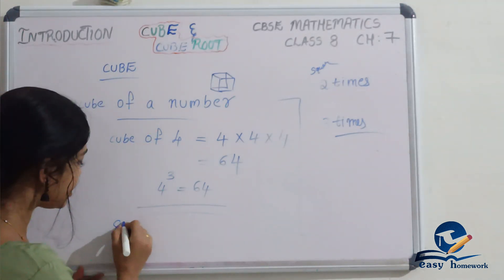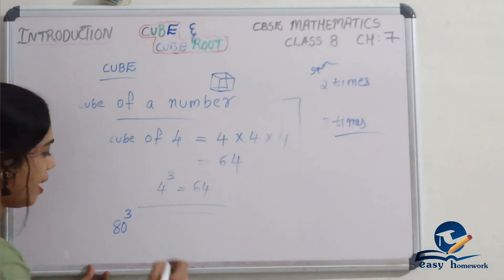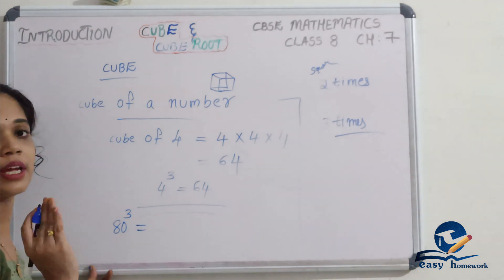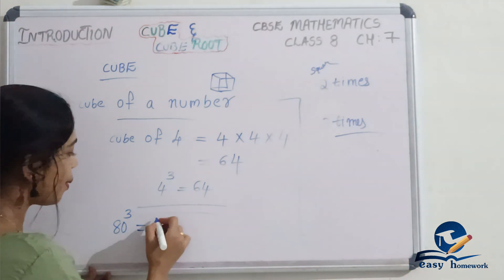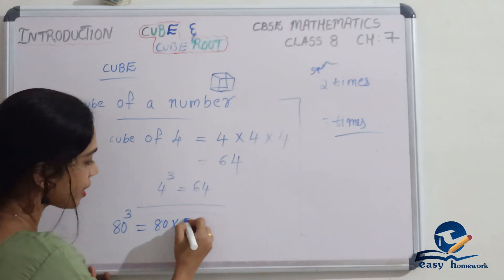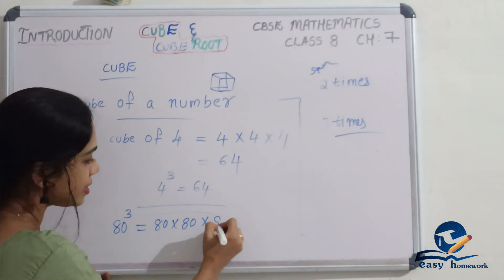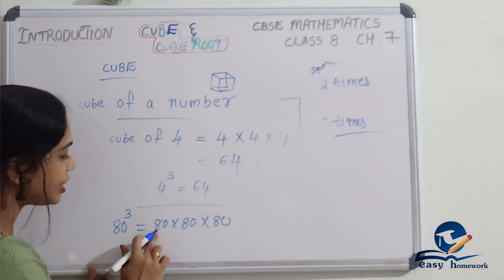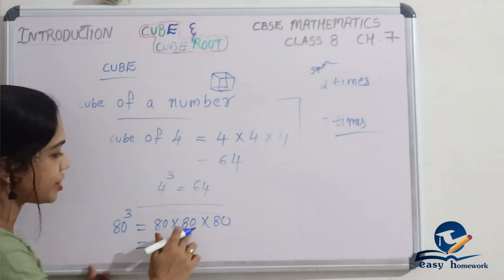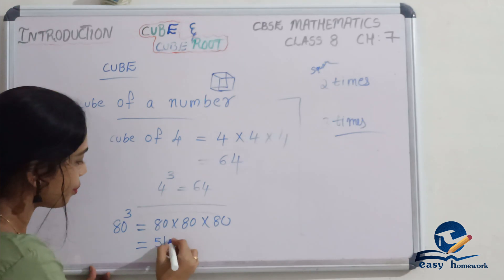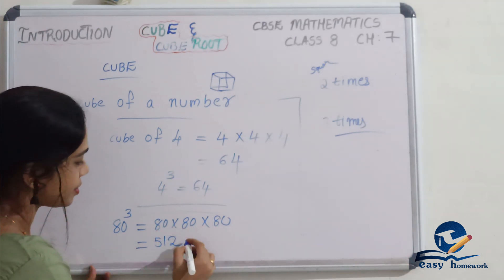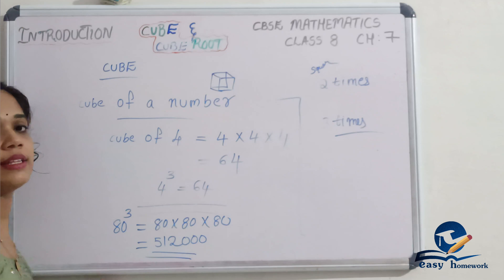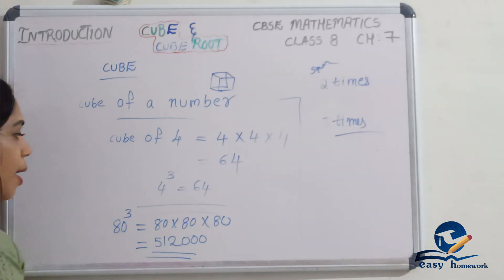Let's take 80 cube. The meaning of cube: take the number 80 and multiply it 3 times. So 80 × 80 × 80. First, 8 × 8 = 64, then 64 × 8 = 512, then three zeros added. That is the answer. Clear?